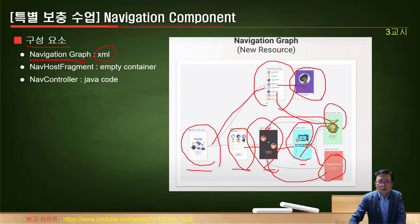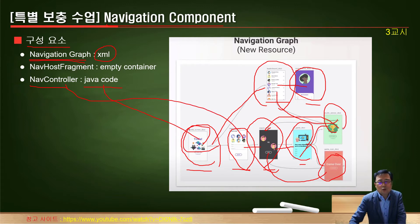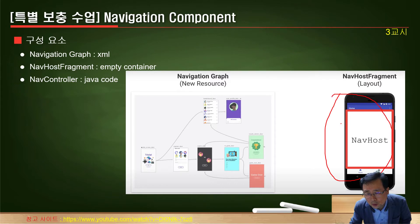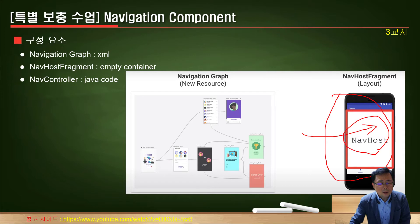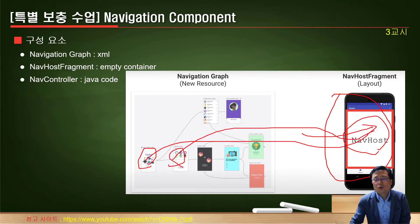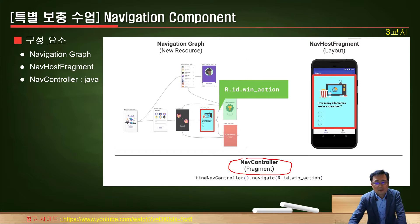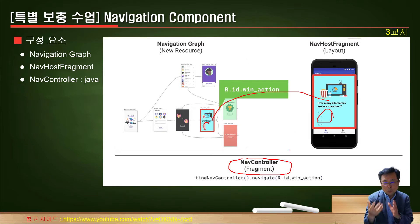화면을 컨트롤하는 것은 내비게이션 컨트롤러라고 하는 자바 코드가 담당합니다. 그리고 내비게이션 호스트 프레그먼트는 스마트폰에서 실제로 보여줄 수 있는 컨테이너 공간으로, 이 화면이 됐을 때 이것을 보여주고 저 화면이 됐을 때 저것을 보여주는 역할을 합니다.